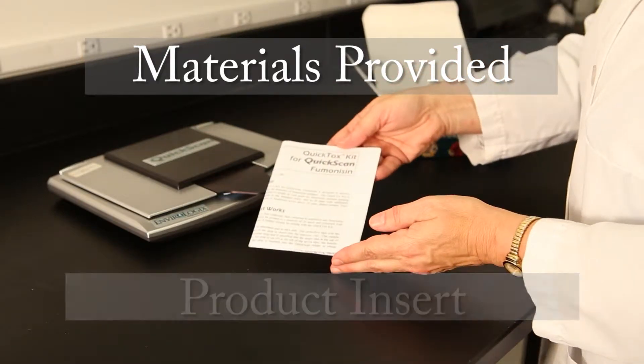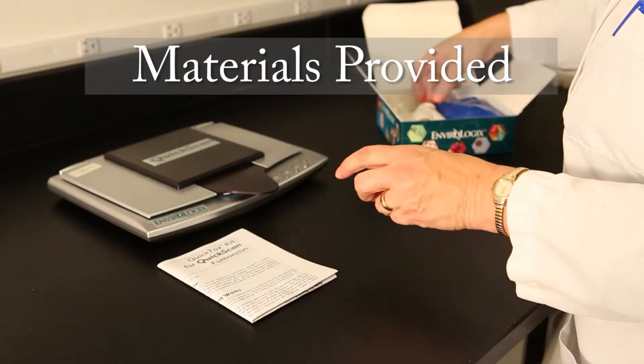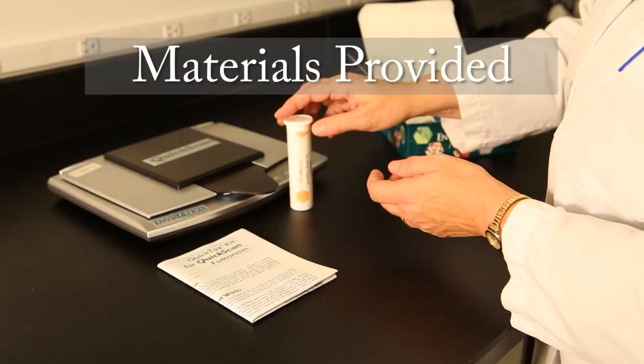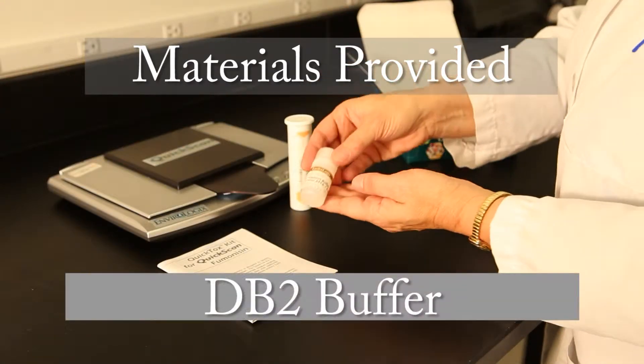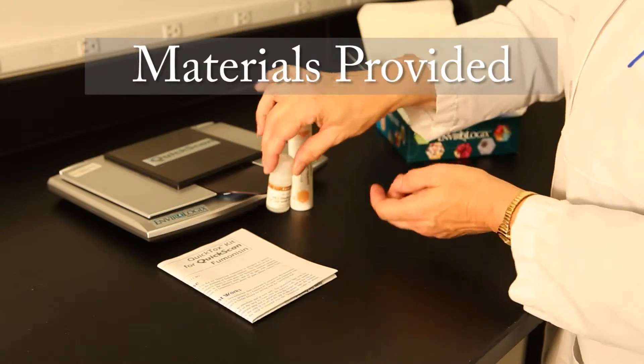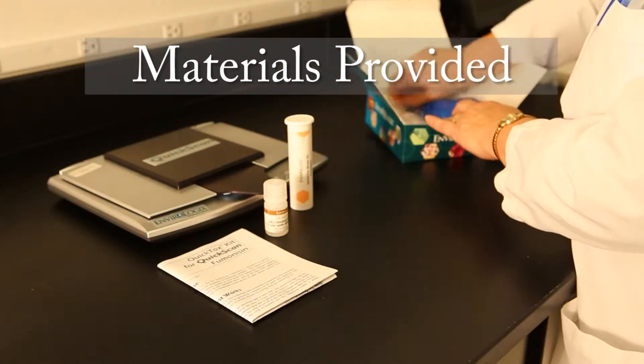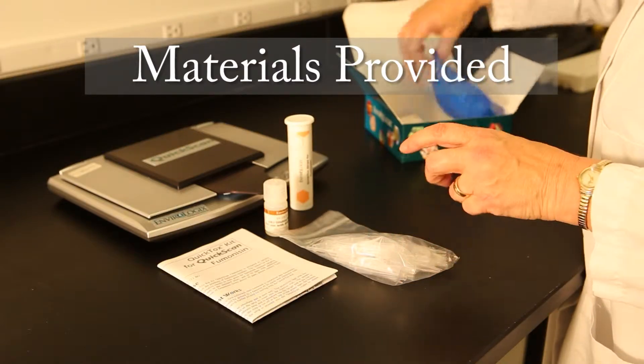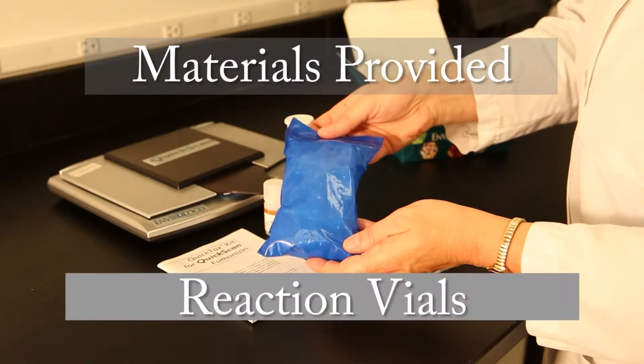Your kit should include a product insert, QuickTox strips sealed in a moisture-resistant canister, DB2 buffer, pipette tips, and reaction vials.